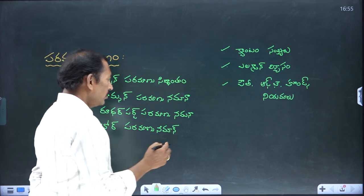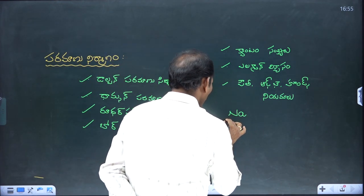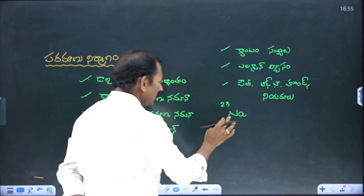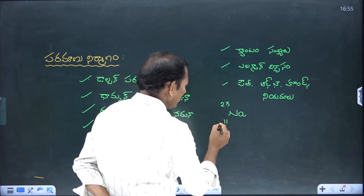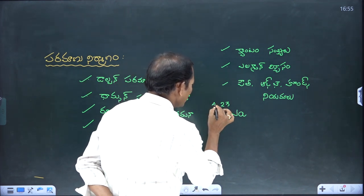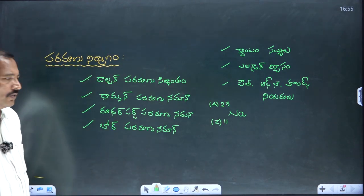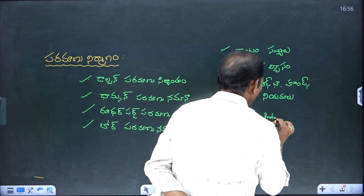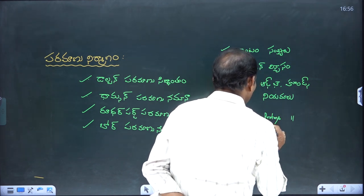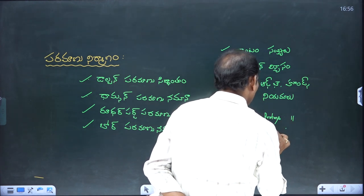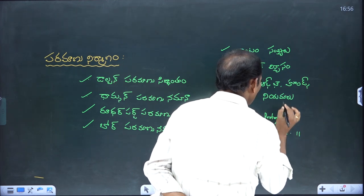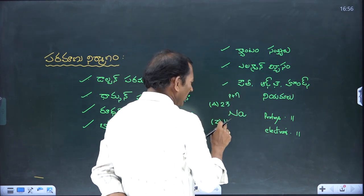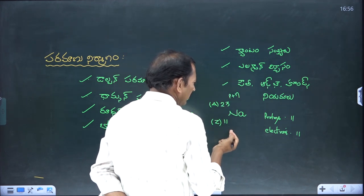Very important: this is sodium. Sodium has atomic number 10 and mass number 23. The atomic number is Z, and it is the Dravya Sankhya (atomic number). Sodium's atomic number is 10, meaning it has 10 protons. The mass number of sodium is 23.